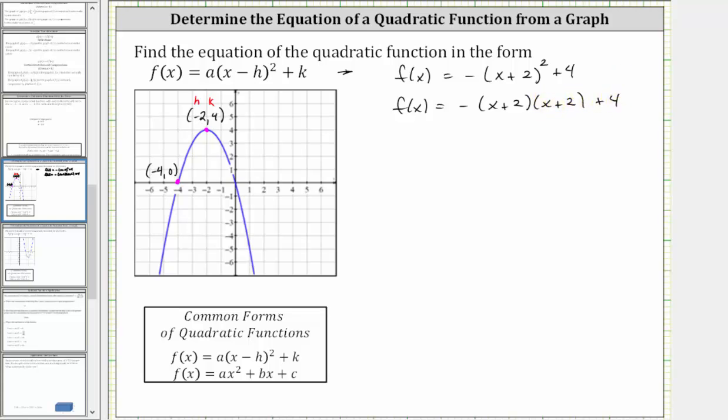When multiplying two binomials, we have four products. We distribute the x and we distribute the two. So we have f(x) equals the opposite of the quantity, x times x is x². Then x times two gives us 2x, but then the next product is two times x, which is also 2x. 2x plus 2x gives us plus 4x. And then two times two is four, giving us plus four, and then we still have plus four outside the parentheses.